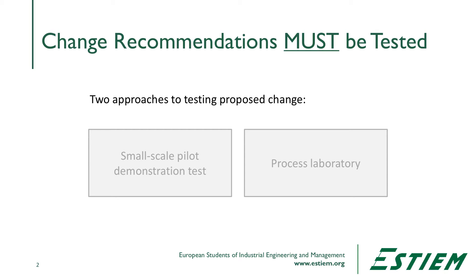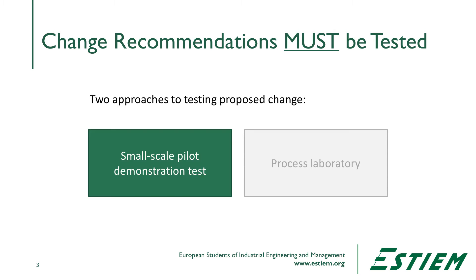There are two approaches for doing this. One is to conduct a small-scale pilot demonstration test, where we make the proposed change, test it, and then evaluate that process using the process performance measures to see: did it make a difference? That's where we could use a two-sample t-test or the individual's chart with stages.